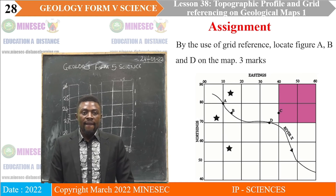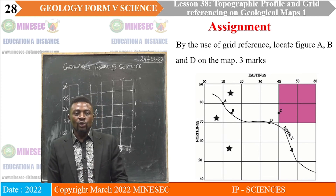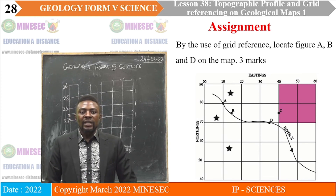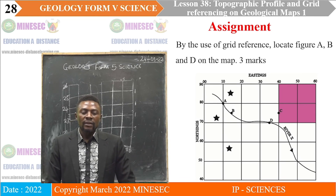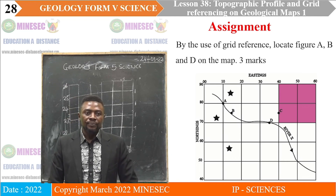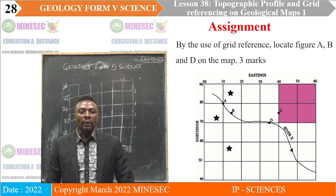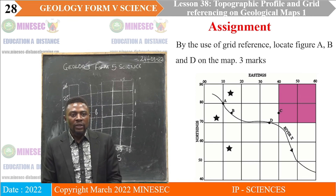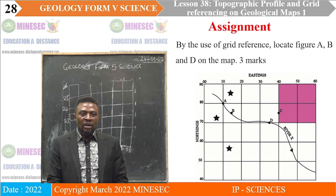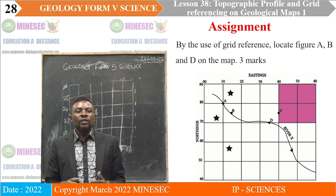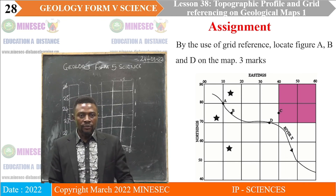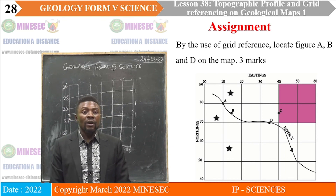For the assignment: by the use of grid references, locate figures A, B, and D on map three. You have to locate figures A, B, and D using grid references on the map that you have on your screen.